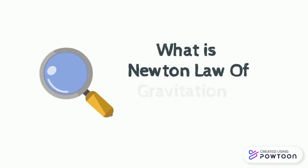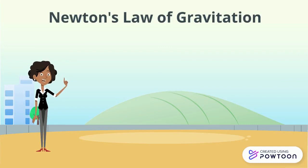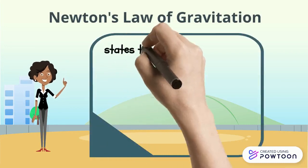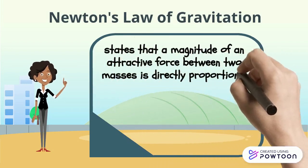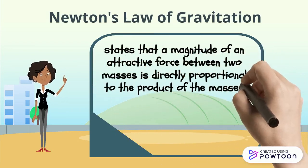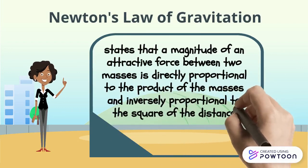What is Newton's law of gravitation, guys? Newton's law of gravitation states that a magnitude of an attractive force between two masses is directly proportional to the product of the masses and inversely proportional to the square of the distance between them.